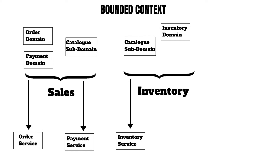In other words, you can understand "bonded to" as owning or taking responsibility for the data and the integrity of the data. So the order service takes responsibility for the order-related data, owns that data, and maintains its integrity. Similarly, other services maintain the integrity of their own domain objects' data.